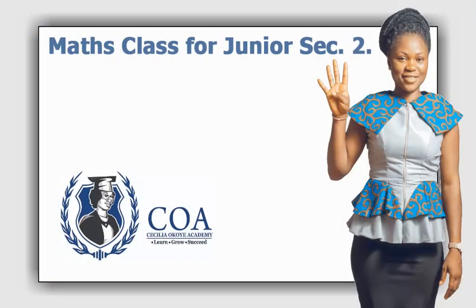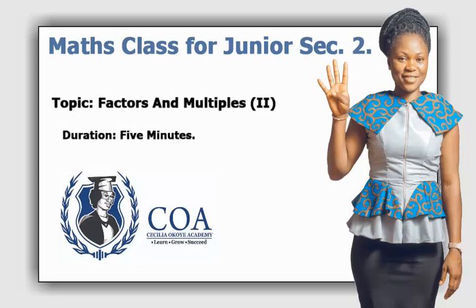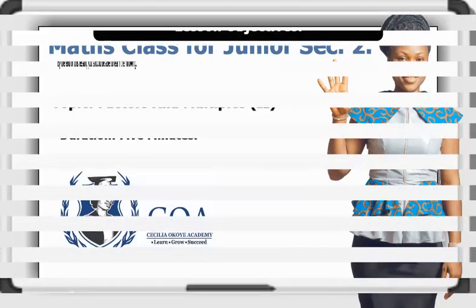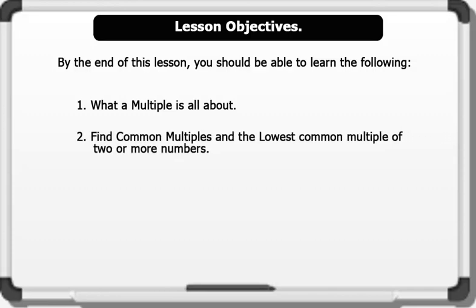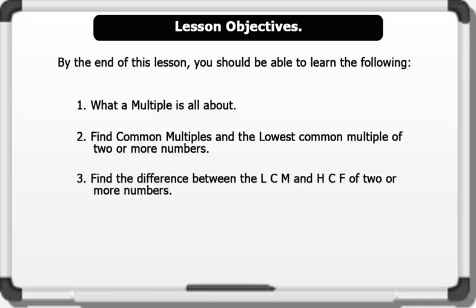Hello, our topic for today's lesson is factors and multiples. The lesson duration is five minutes. By the end of this lesson, you should be able to learn: one, what a multiple is all about; two, find common multiples and the lowest common multiple of two or more numbers; three, find the difference between the LCM and HCF of two or more numbers. Please pay attention as we go through the lesson together.